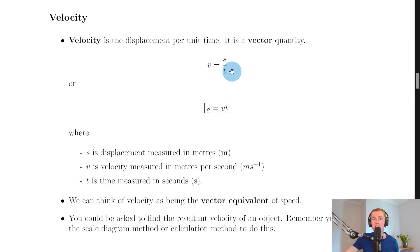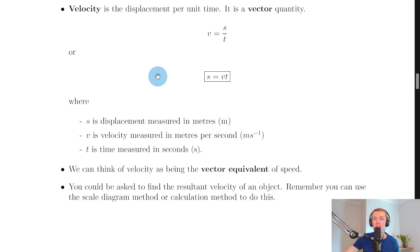So we have v equals s over t or the form you'll get on the relationship sheet in the exam is s equals vt where s is displacement measured in meters, v is velocity measured in meters per second and t is time measured in seconds.